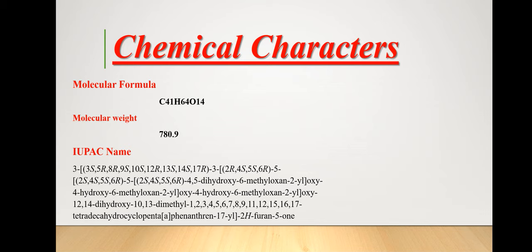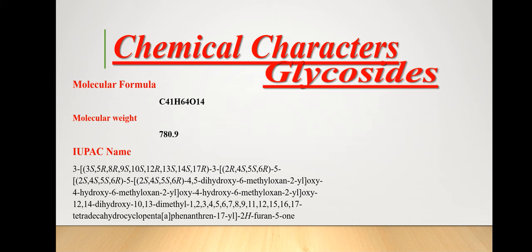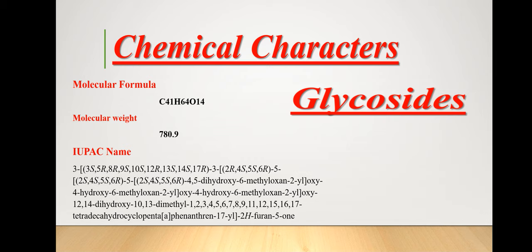The pharmaceutical chemistry of digoxin: digoxin has a molecular formula of C41H64O14 with a molecular weight of 780.9 AMU. It has a very complex ring structure, and according to IUPAC naming, it has the long IUPAC name you can see on screen. The main constituent is glycosides.